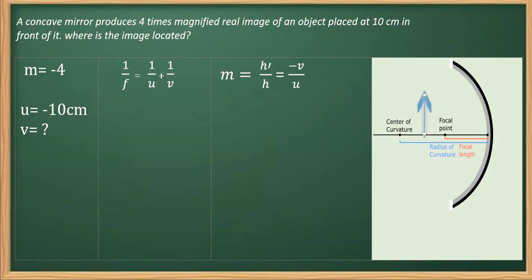So this will be the case when the object is placed somewhere here. In this case, the image formed, that means whenever the object is between f and c, the image formed is real, inverted, and larger in size.